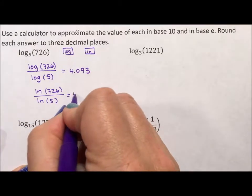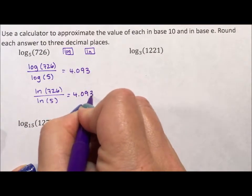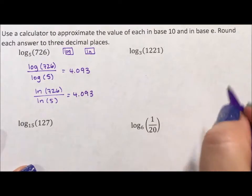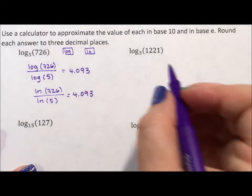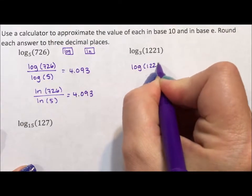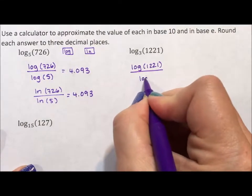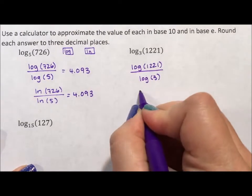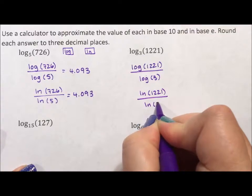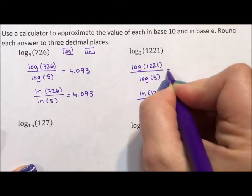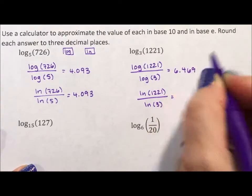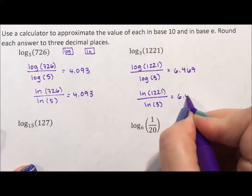If I plug this into my calculator I get 4.093. I highly suggest you test this out because you need to know you understand how to plug this into a calculator. So this one becomes log of 1221 divided by log of 3, or natural log of 1221 divided by natural log of 3. You should pause at this point and test it out on your own and see if you are getting the same answers that I am getting.